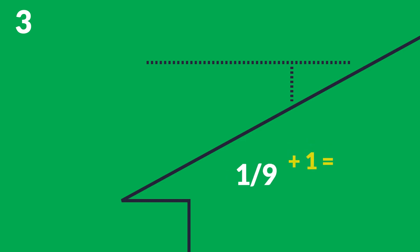Number 3: Add 1 to your number. 1 ninth plus 1 equals 10 ninths.